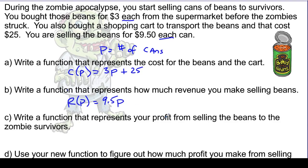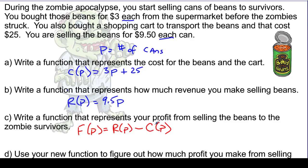Now I'm going to write a function that represents my profit. Let's call that F of P. That's going to be represented by taking my revenue R(P) — how much money I made — and subtracting from that my cost C(P) — how much money I had to spend. So F(P) = R(P) - C(P), which means F(P) = 9.5P minus (3P + 25). Be careful: I'm subtracting the entire expression 3P + 25, so it has to be in parentheses.